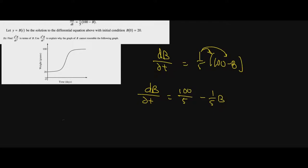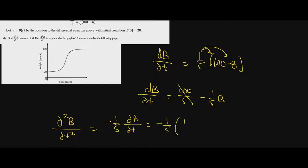When we take the second derivative, the derivative of the constant 20 is 0, and we get -(1/5) times db/dt. Since db/dt = (1/5)(100 - b), we substitute: d²b/dt² = -(1/5) · (1/5)(100 - b) = -(1/25)(100 - b).